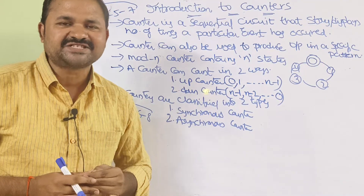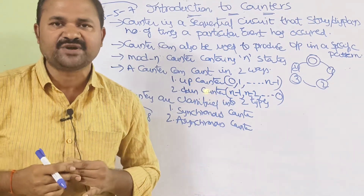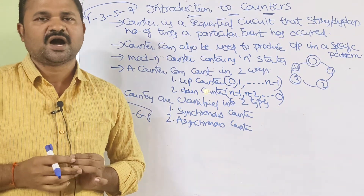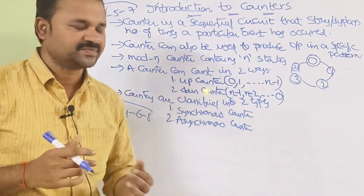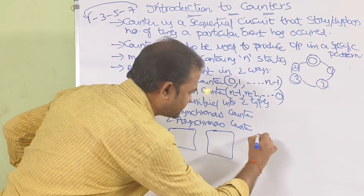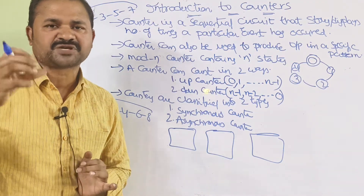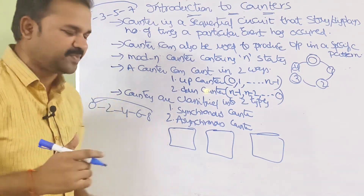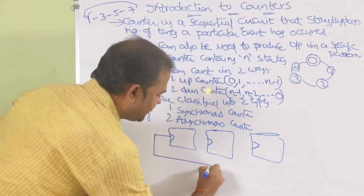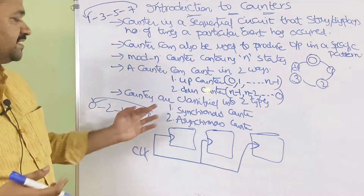Counters are mainly classified into two types: synchronous counters and asynchronous counters. In a synchronous counter, all the flip-flops are connected with the same clock pulse. So if we have three flip-flops, the same clock pulse is applied to all of them — that is a synchronous counter.